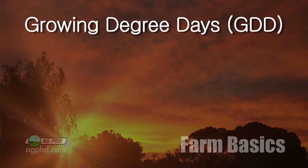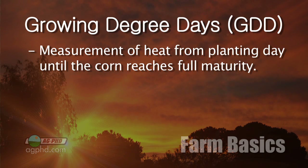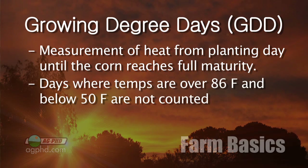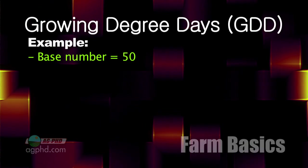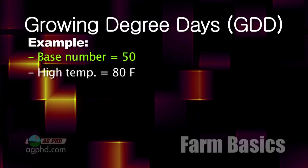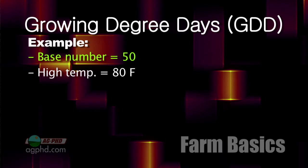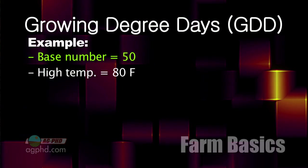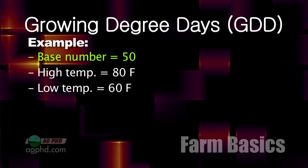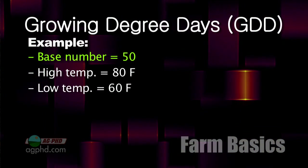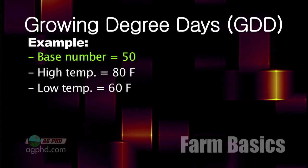When we're thinking about corn and growing degree days, we're basically measuring how much heat has accumulated from the time you planted that corn until it's ready to mature. We don't count days over 86 degrees on the high side, and we don't count temperatures under 50 degrees. So the base is 50 degrees. We look at the high temperature for the day — if it's above 86, we call it 86. Let's say it was 80 degrees today. Then we look at the low — if it's below 50, we count it as 50. Let's say the low was 60 degrees, so we have a high of 80 and a low of 60.